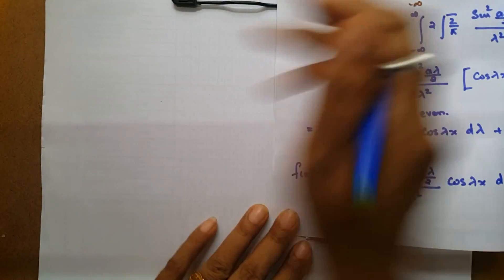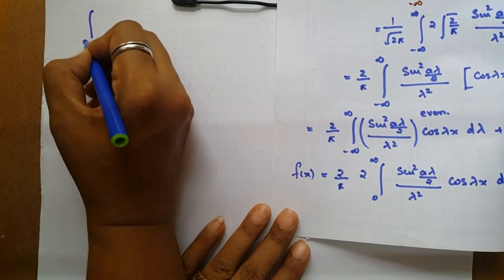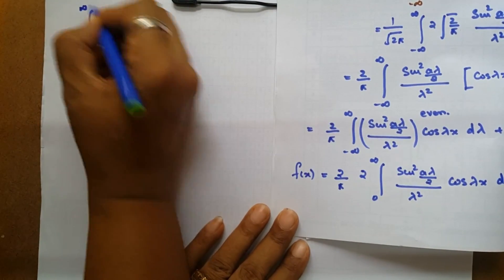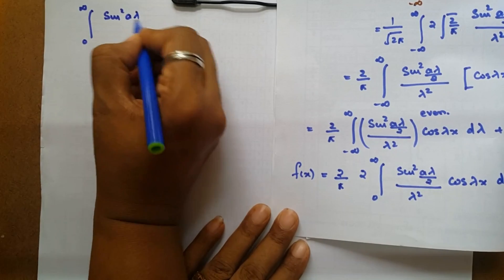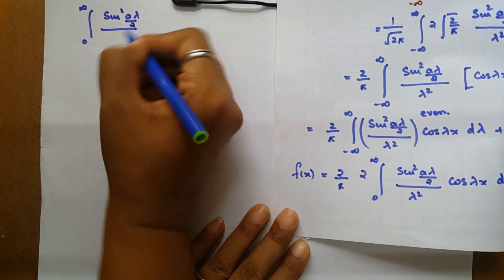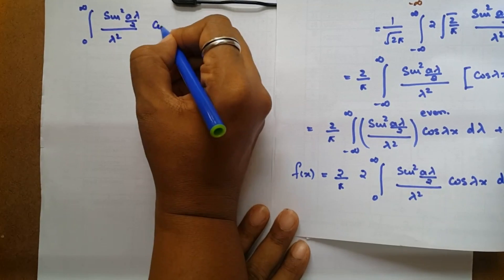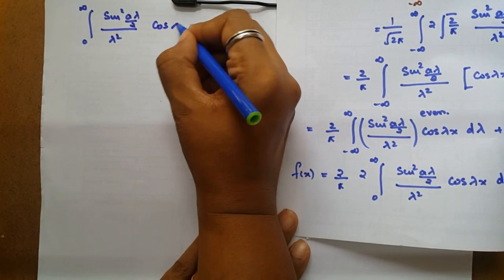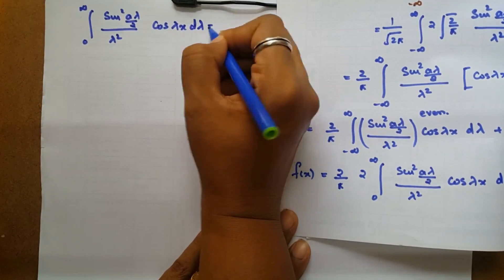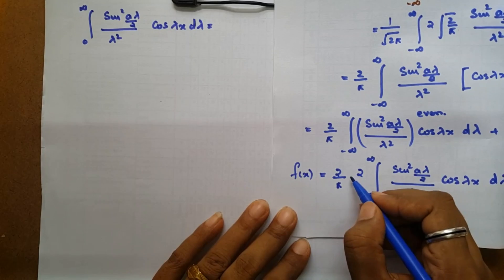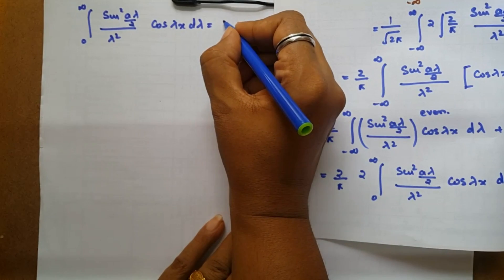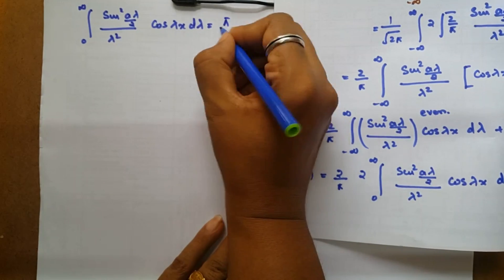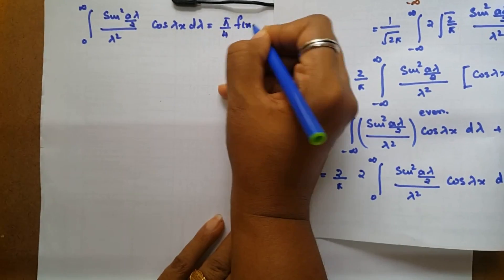This means the integral from 0 to infinity of sin²(aλ/2) / λ² times cos λx dλ equals π/4 times f(x).